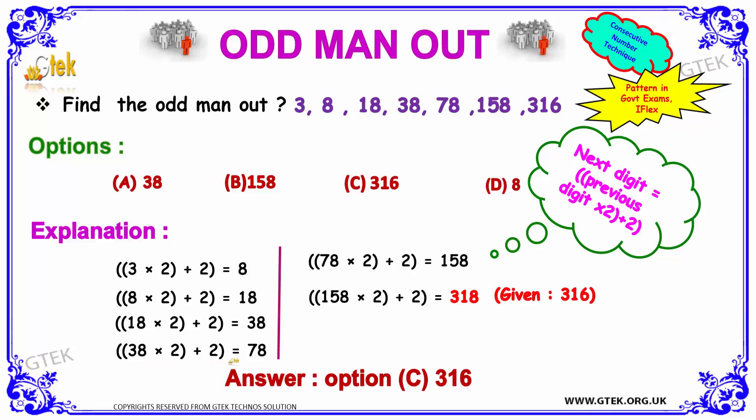38 into 2 plus 2 is equal to 78. 78 into 2 plus 2 is equal to 158. And 158 into 2 plus 2 is 318, and it's not 316. The option is C.